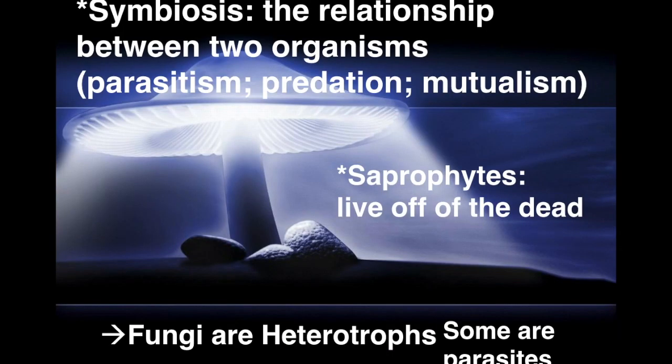The word symbiosis means a relationship between two organisms. This can be positive or negative. Many fungi have a form of symbiosis called parasitism, which is a positive-negative relationship where the fungi may feed off of the host. A great example of this is athlete's foot or ringworm. There are also some examples of mutualism with fungi, where fungi may grow on the roots of plants helping the plant absorb more water, so both the fungi and the plant benefit.